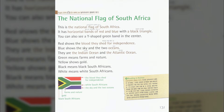You can also see a Y-shaped green band in the center. Red shows the blood they shed for independence. Blue shows the sky and the two oceans — they are the Indian Ocean and the Atlantic Ocean.